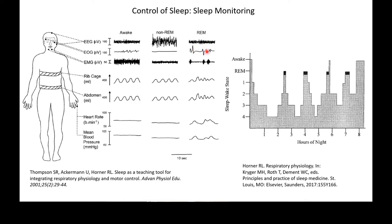REM is known as the dreaming sleep, and we are moving our eyes around during that time. We may be vocalizing during that time. When awake, we have a tonic activity, but that is suppressed when we go into non-REM sleep. The ribcage and abdomen are moving to provide ventilation, but that is less in non-REM sleep and becomes erratic in REM sleep. Heart rate shows a depression but is quite erratic in REM, and that goes for blood pressure too.